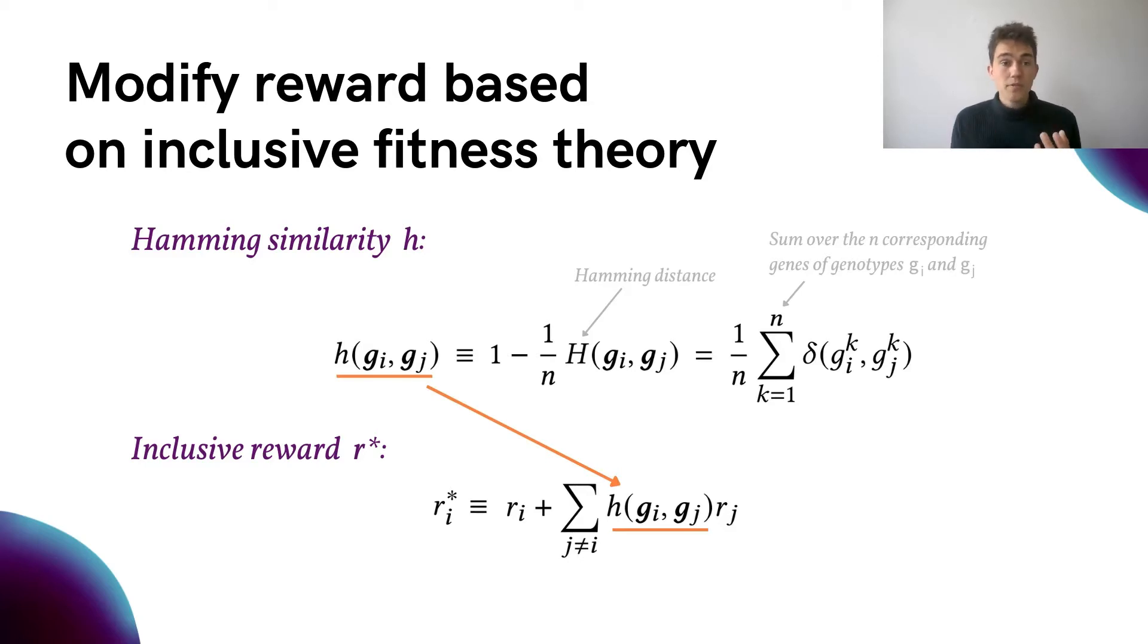Next, we modify the individual reward of each agent by adding the rewards of the other agents as well, weighted by the Hamming similarity to the agent. We call this modified reward the inclusive reward, as an adaptation of William Hamilton's well-known inclusive fitness theory from biology, which posits that natural selection favors organisms that help their genetic relatives.